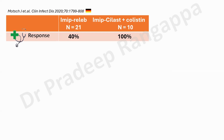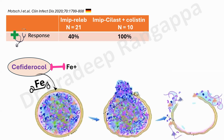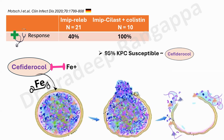Cefiderocol is a newer antibiotic unavailable in India, and we are all eagerly waiting for it since it appears in most guidelines. It binds to iron and, with the help of an iron transporter, enters into the bacterial cell — that's why it's called a siderophore. It then causes bacterial lysis and death. Like ceftazidime-avibactam and meropenem-vaborbactam, 95% of KPC strains are susceptible to cefiderocol.